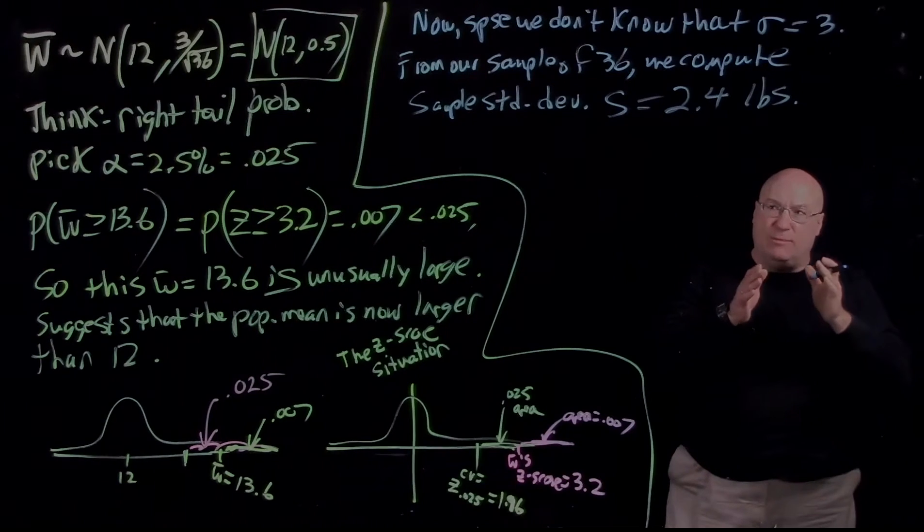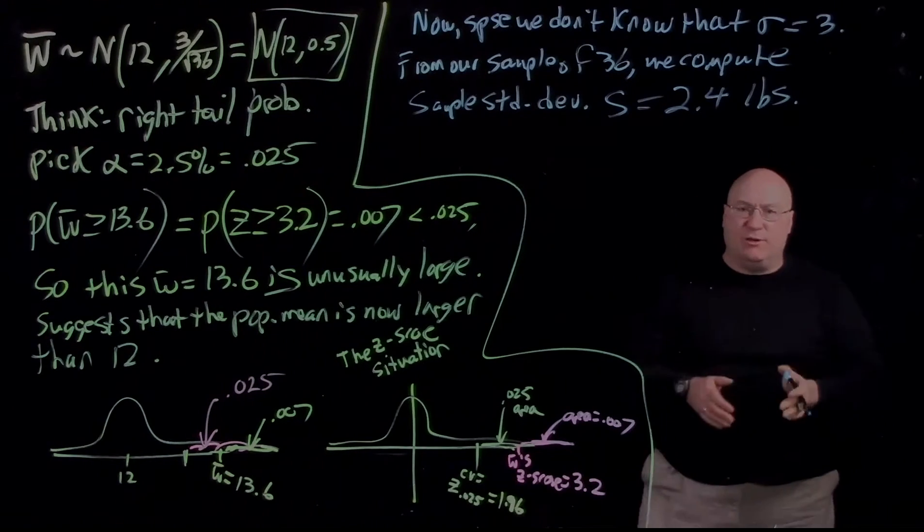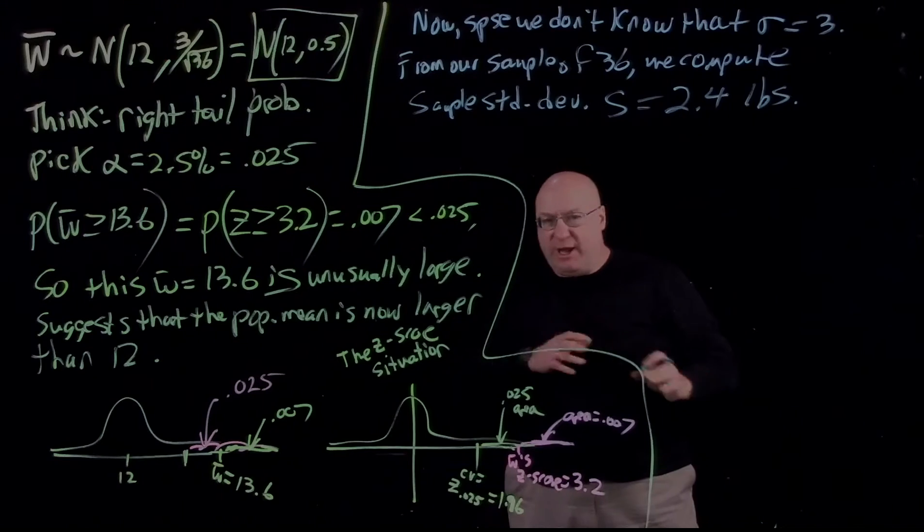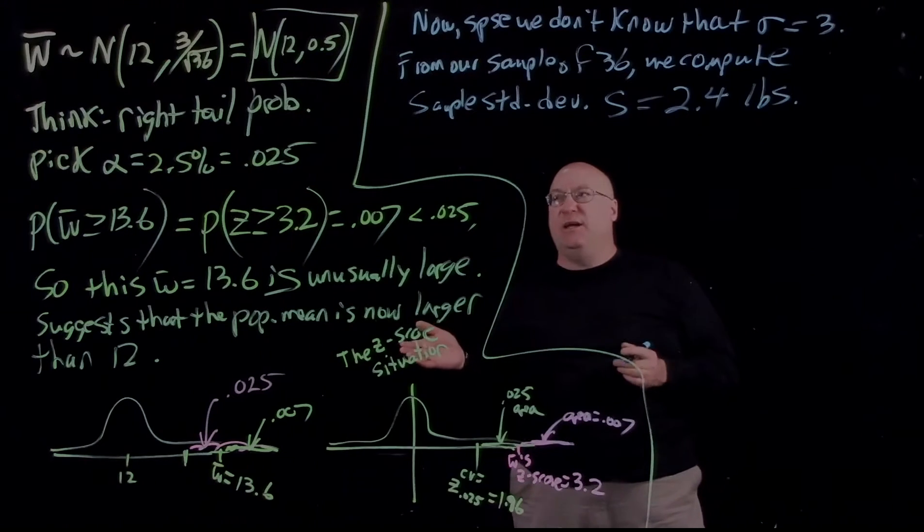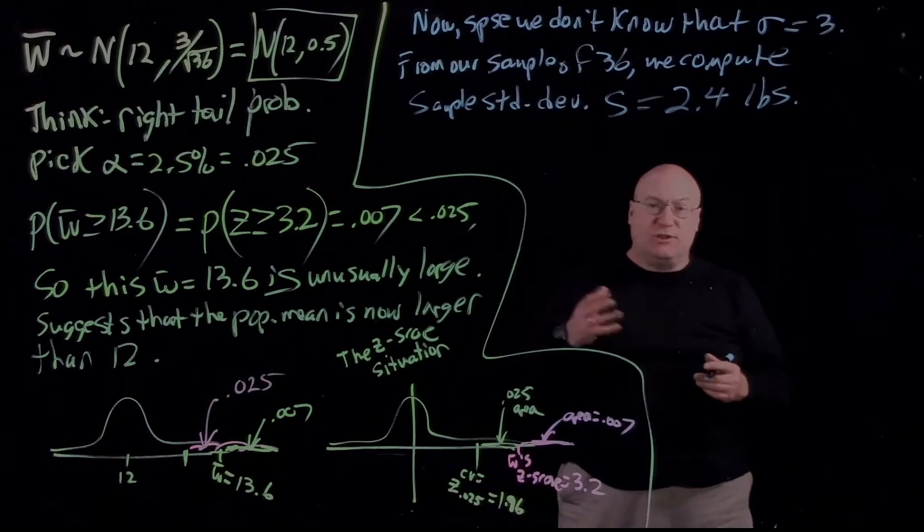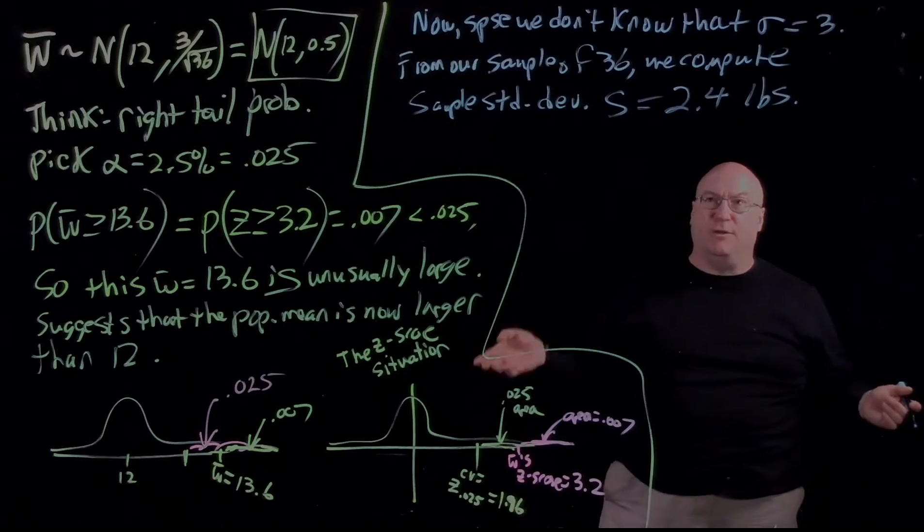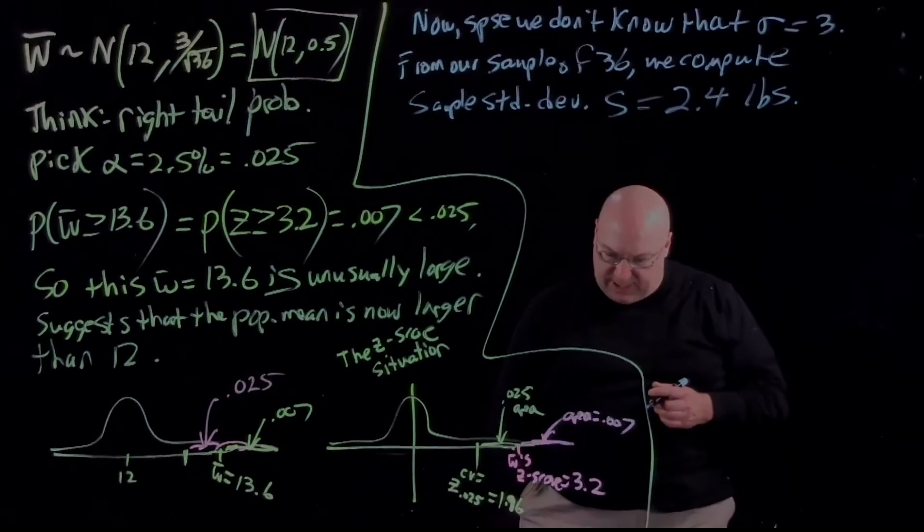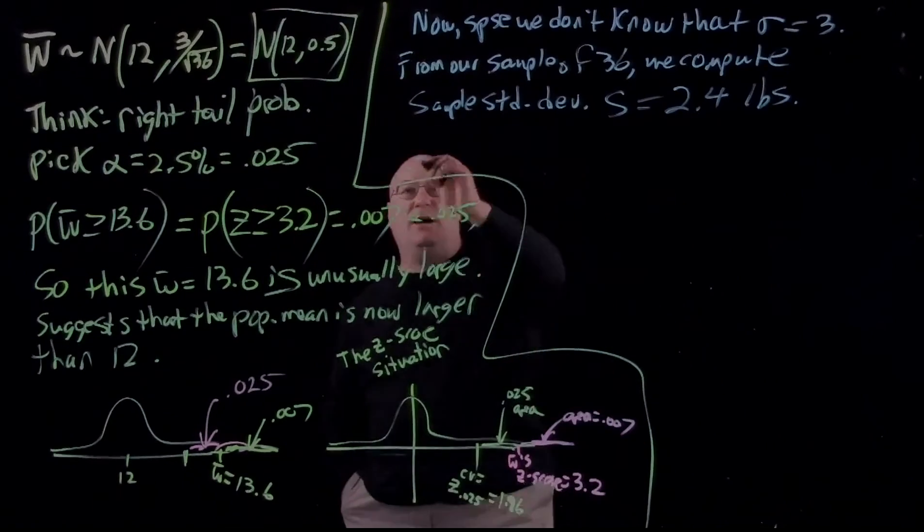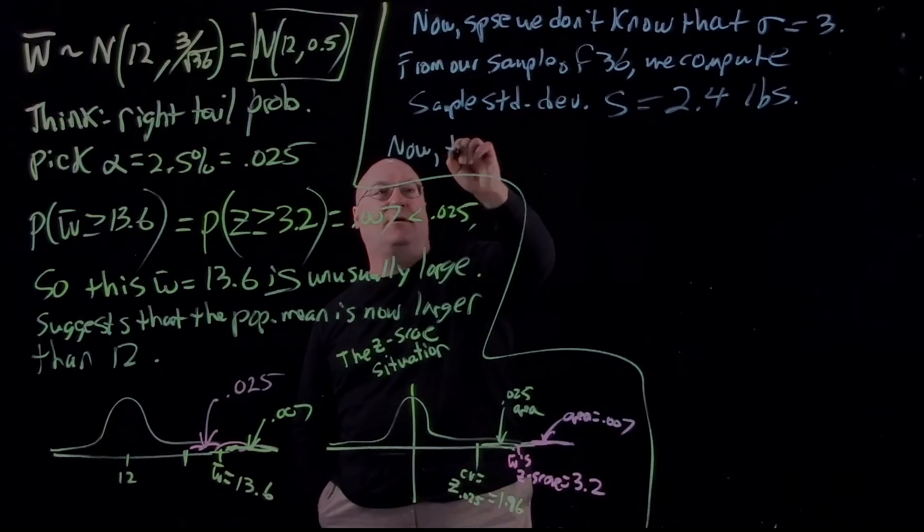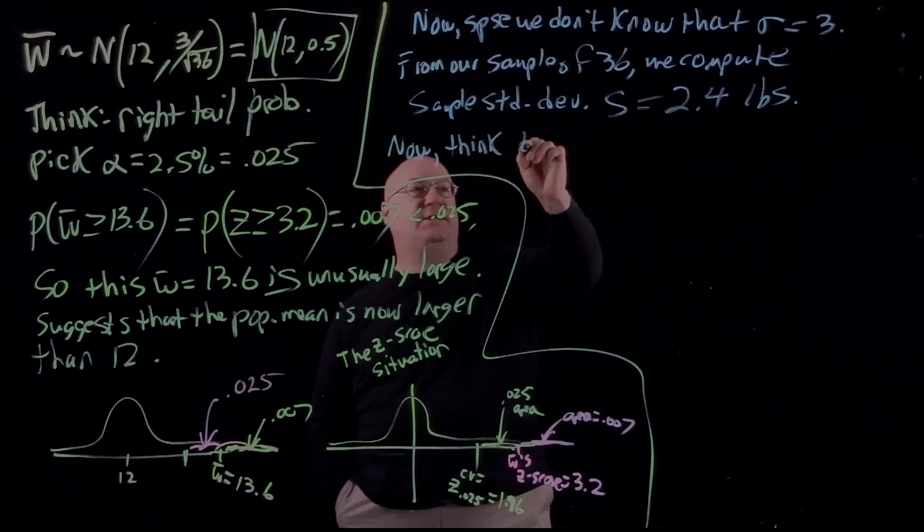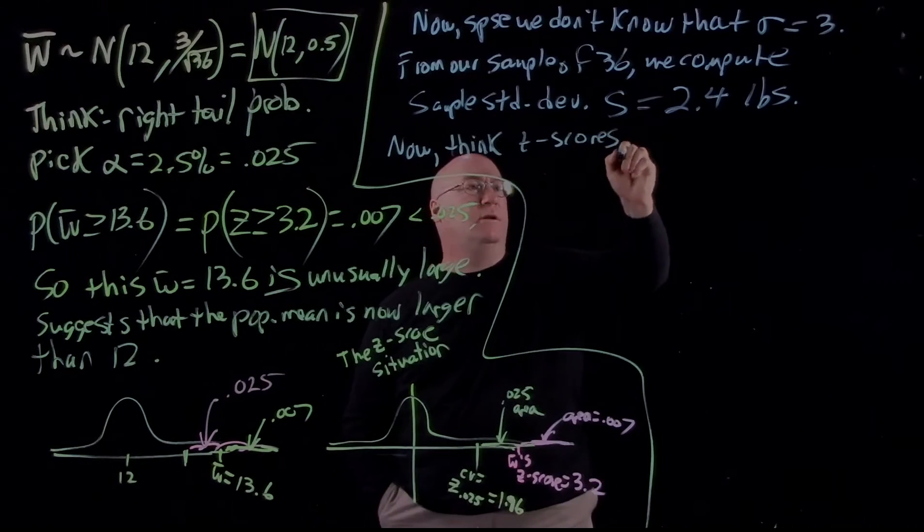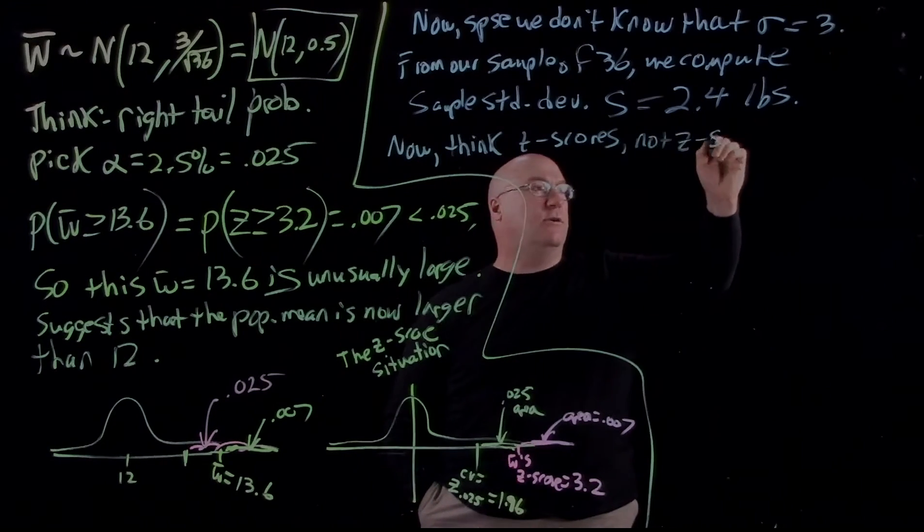So we do W1 minus W bar squared, W2 minus W bar squared, add them all up, divide by 36 minus 1, divide by 35, take the square root. There's our S. So now we're going to think of T-scores, not Z-scores.